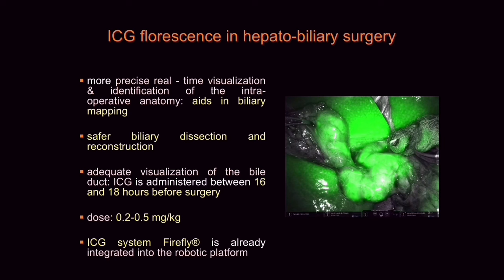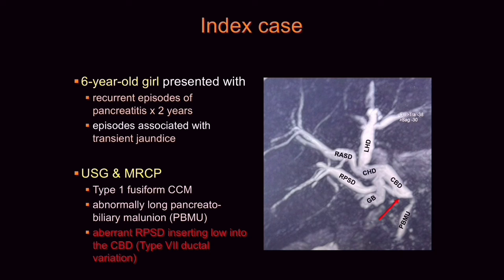This 6-year-old girl presented with recurrent episodes of pancreatitis for the past 2 years, associated with transient jaundice. The MRCP shows a type 1 fusiform congenital choledocal malformation with an abnormally long pancreatic biliary manunion. There is an aberrant right posterior sectoral duct inserting into the distal end of the CBD — that is a type 7 malformation.